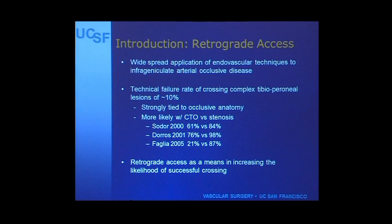We've heard a little bit today about aggressive endovascular interventions for complex tibio-perineal disease. The field as a whole is moving in that direction, in part because of improved techniques and improved technology. We're a lot more successful at getting across these lesions and being maybe a little bit more adventurous. Despite this, there is still a substantial technical failure rate, and a lot of that has to do with the anatomy of the lesion. Certainly long-segment CTOs, flush occlusions, and trifurcation occlusions can all be very difficult to manage.